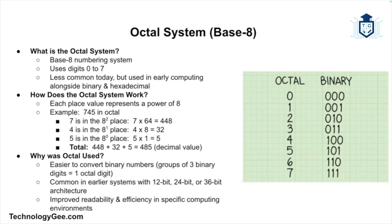Octal was historically used because it's easier to convert binary numbers into octal. For example, groups of three binary digits can be directly converted into one octal digit. Let's look at the octal number 745.